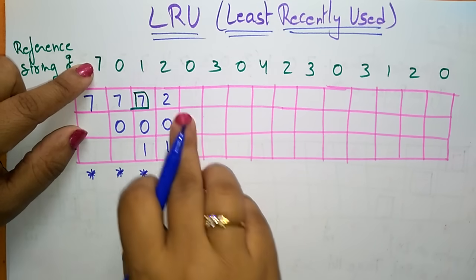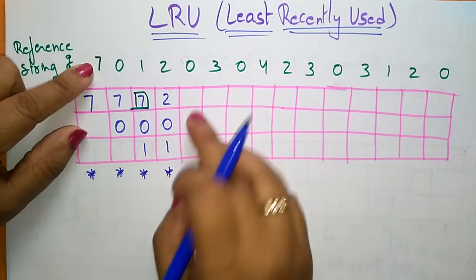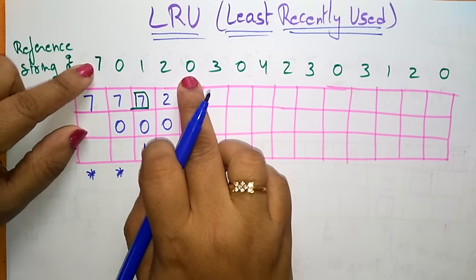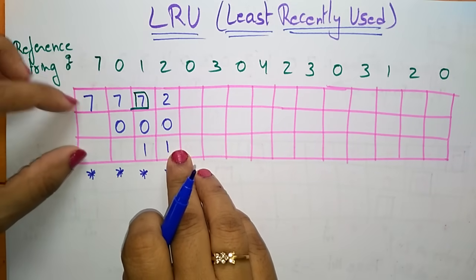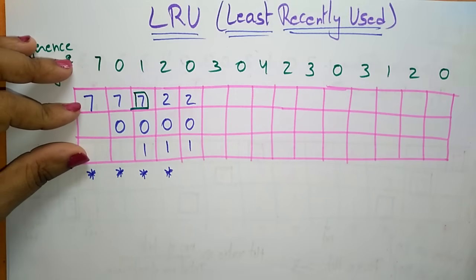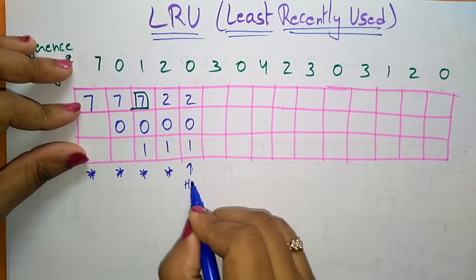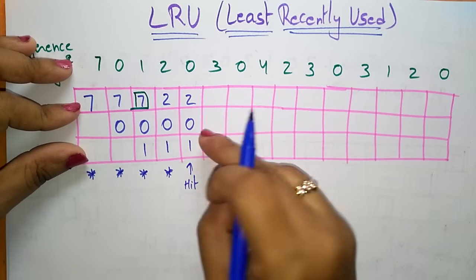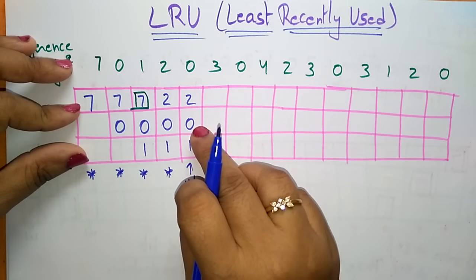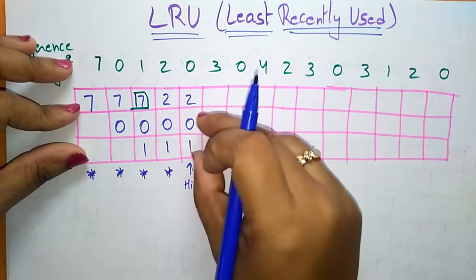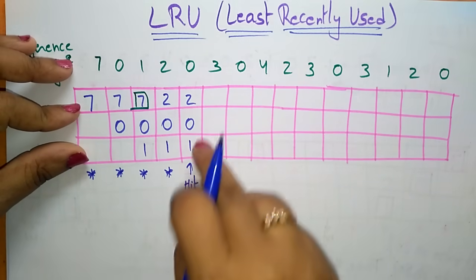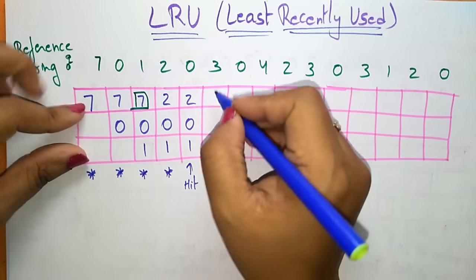Now I have to place 0. Page 0 is already present in the RAM, so just write it as it is. This is called a hit — a hit means the demanded page is already present in the main memory. If the page is not present it is a page fault; if it is already present, it is a hit.